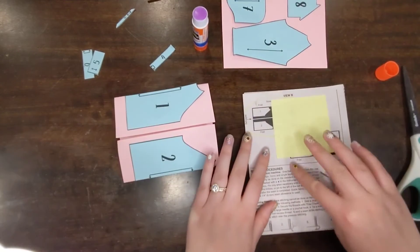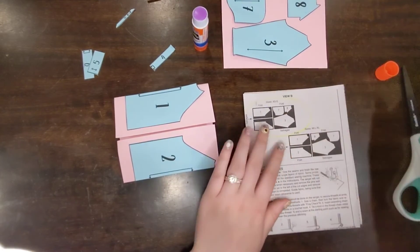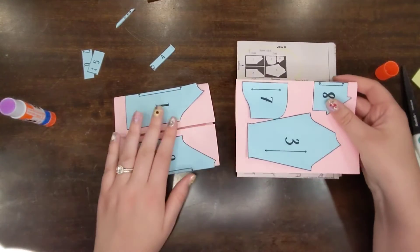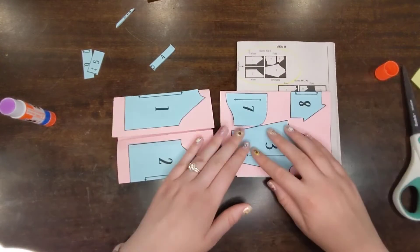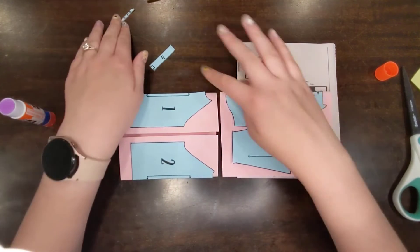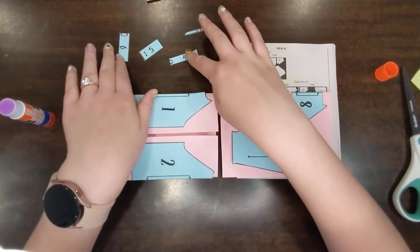Now you can see how this layout comes together. I have pieces three, seven, and eight. I have pieces one and two. They're both laid out just differently. And you'll notice I have a bunch of extra pieces.